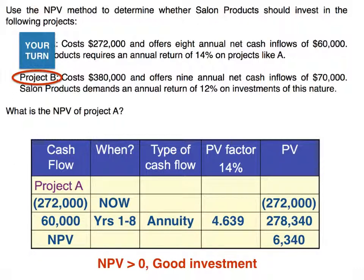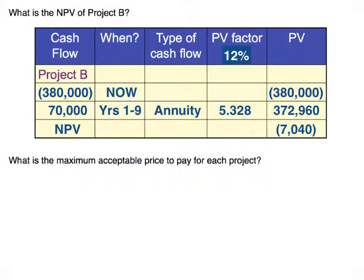I'd like you to give Project B a shot — see if you can figure out the net present value and determine if Project B would be a good investment. For Project B, you should have found an annuity factor at 12% of 5.328, since $70,000 was the same cash flow every year. The present value of those cash inflows would be $372,960, which is less than the capital outlay, giving a negative net present value. So Project B would not be a good investment.